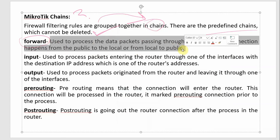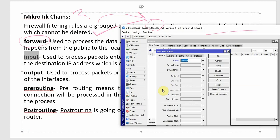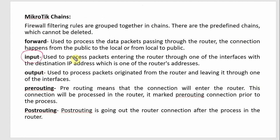Then the Input chain — packets entering the router through one of its interfaces with the destination IP being one of the router's own addresses. If the address is one of the router's addresses and the packet is destined for the router itself, then the Input chain is selected.